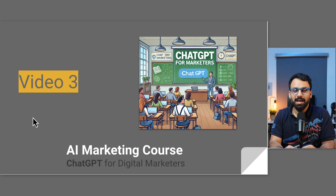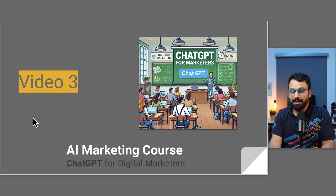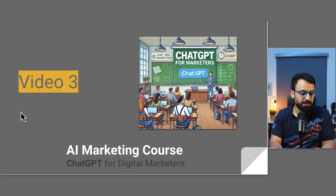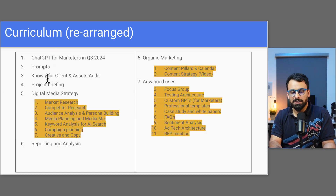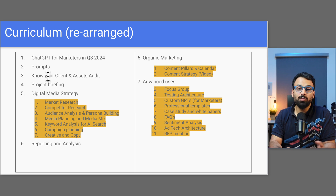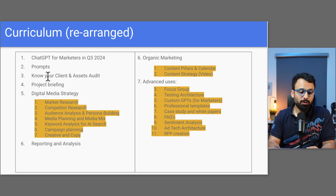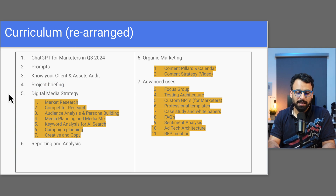Hello and welcome to the third video of the AI Marketing course where we discuss mainly ChatGPT and how a digital marketer can leverage ChatGPT in their day-to-day work and become more efficient. In the two previous videos, we discussed about ChatGPT, prompts, client audits, and how to know about your client before a meeting. In this video, we'll be discussing project briefing.